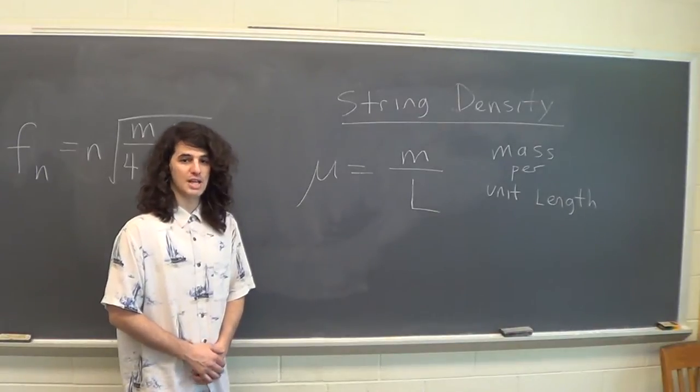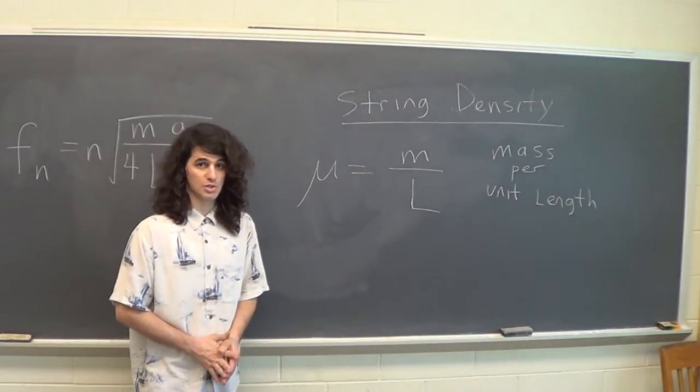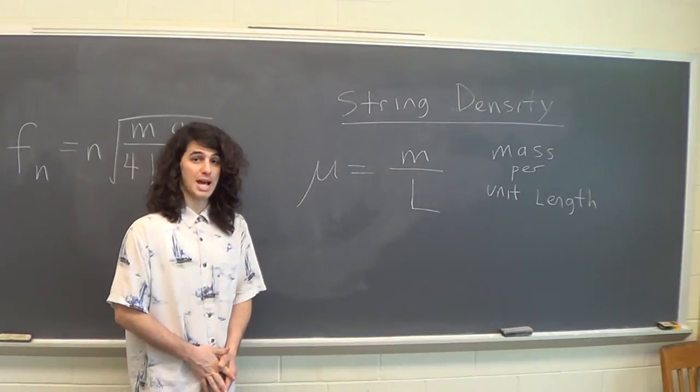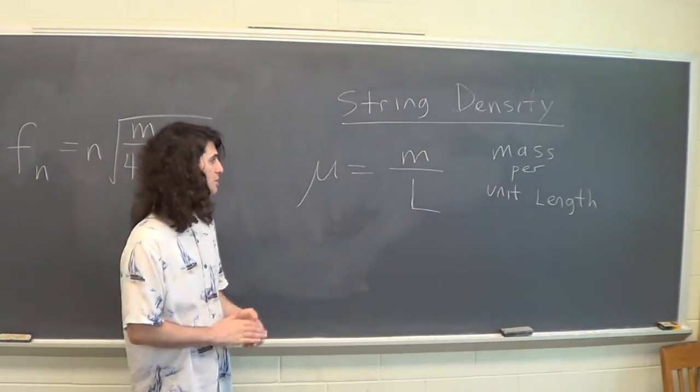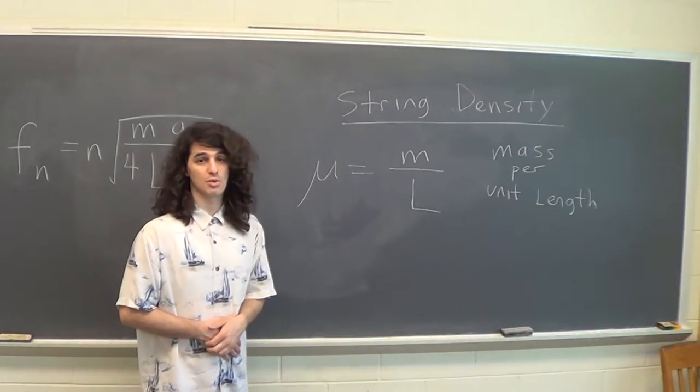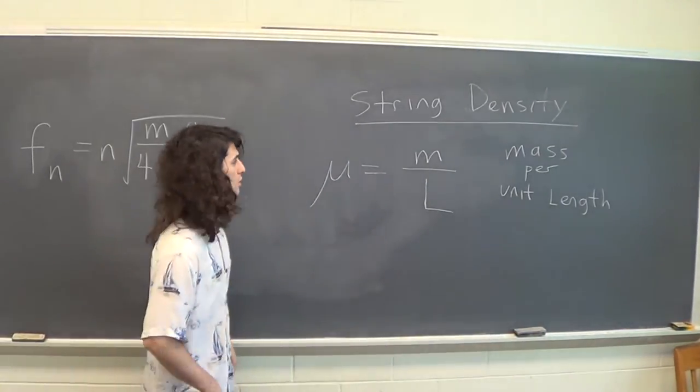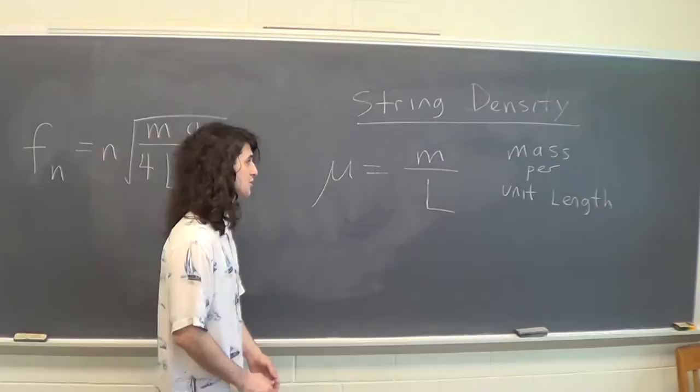This lab uses a different concept of density than you're probably normally used to using. In this particular case, we're using mass per unit length. So in this case, the best units of measure would be grams per meter or grams per centimeter. Those are both acceptable.